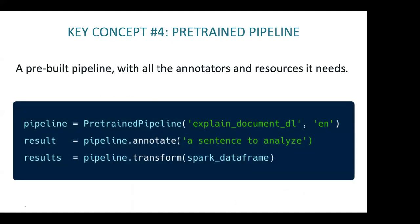The fourth concept is a pre-trained pipeline — a pre-built pipeline including a set of annotators and their resources. When you call load PretrainedPipeline 'explain_document_dl', it loads the pipeline, all models, all embeddings, and initializes everything. A pipeline has three important methods: annotate (works on a single string), transform (works on a Spark DataFrame), and fit (for training). All pipelines are trainable — that's how we support new languages and domain-specific use cases, which are essential in most real industry NLP projects.